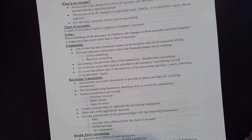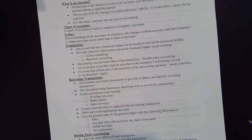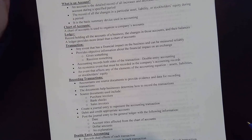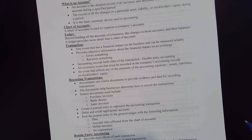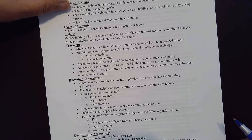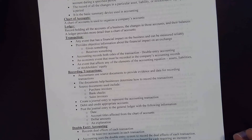A chart of accounts is used to organize a company's accounts. It lists assets, liabilities, equity, revenue, and expense accounts, each with a numbering system. For example, accounts starting with 1000 may be asset accounts, 2000 for liabilities, 3000 for equity, 4000 for revenue, and 5000 for expense accounts.